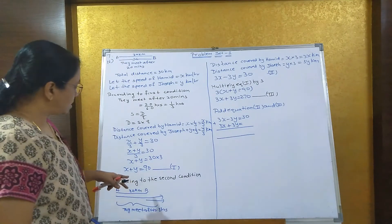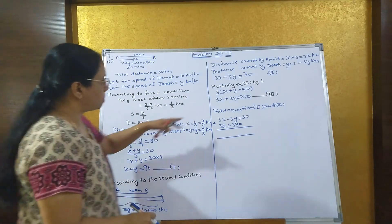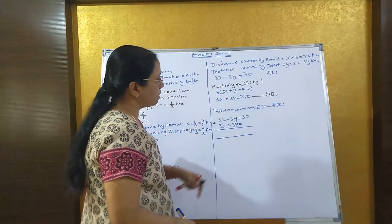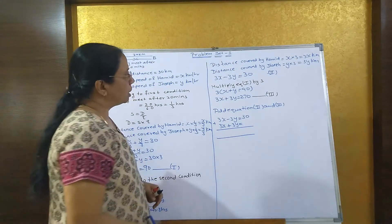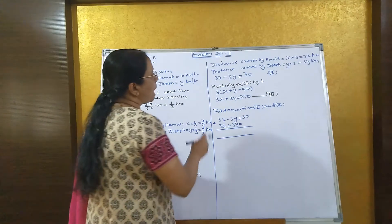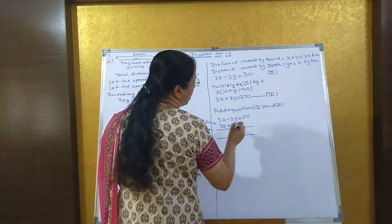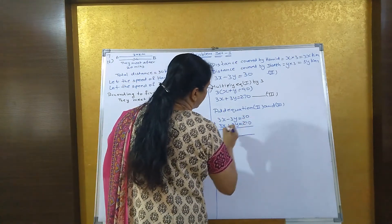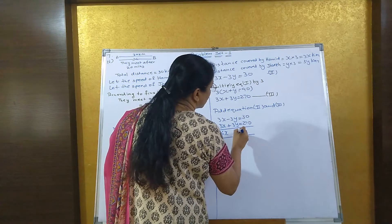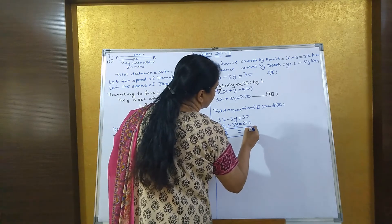Now we have plus 3y and minus 3y. If you compare the third equation and second equation, you have to add equations 2 and 3 because of opposite signs. When you add both equations, you get 6x equals 300.